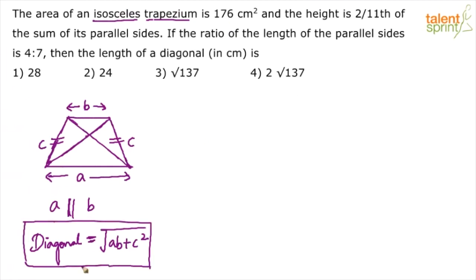Now what are A and B? A and B are the two parallel sides. C is the length of one of those two equal sides there. Now what is given in the question? The question here talks about the area. The area is 176 centimeter square. The height, see height again is the distance between the two parallel sides. This is called height, H. The height is 2/11th of the sum of its parallel sides. And the ratio between the parallel sides is 4 is to 7.